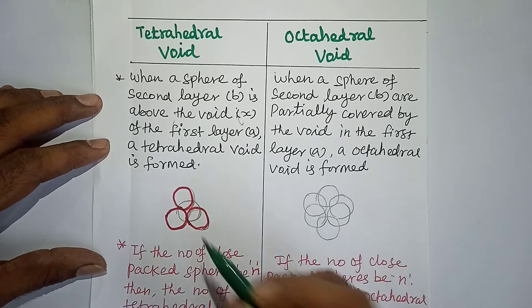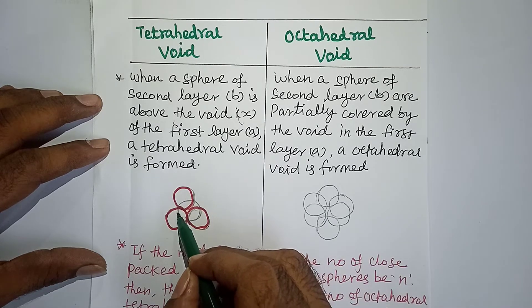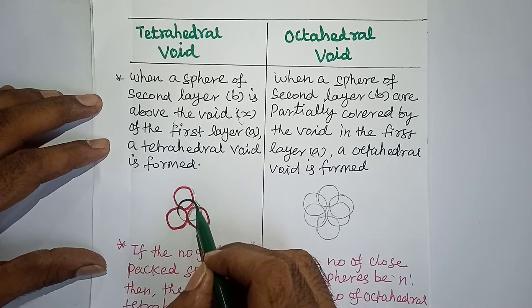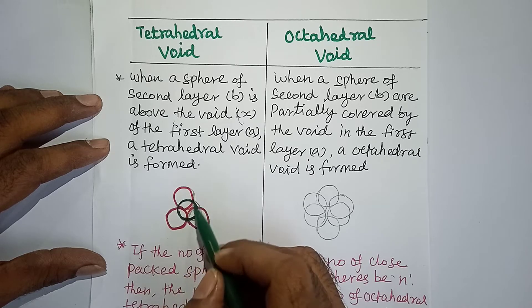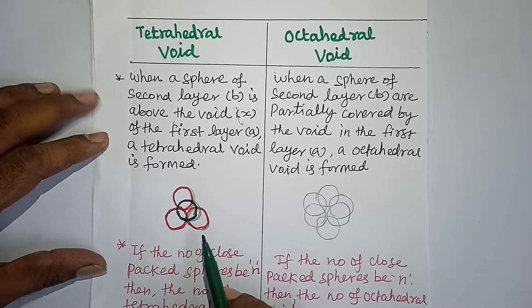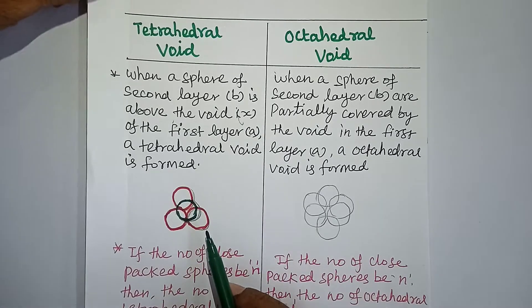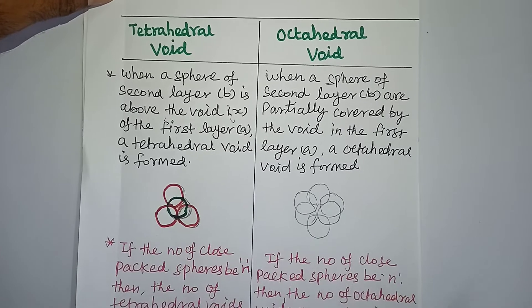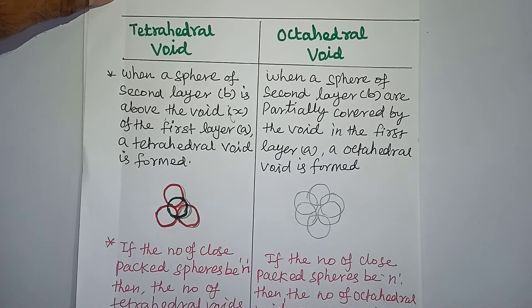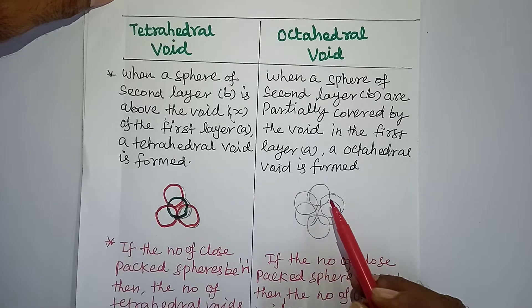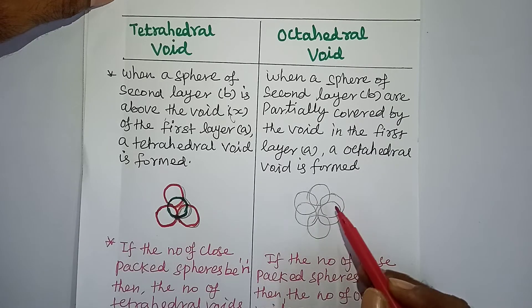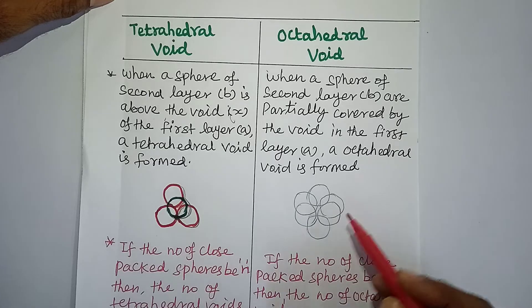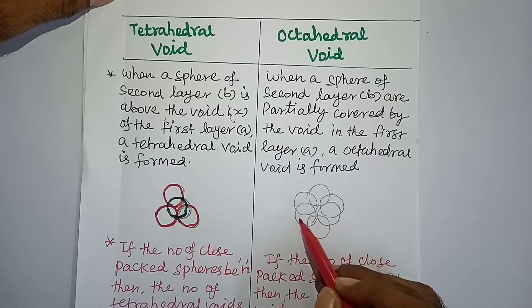We place a second layer on top of this layer, and we get tetrahedral voids. Tetrahedral voids are nothing but the free space which is present between four atoms. Octahedral voids means the free or vacant space between six atoms is called an octahedral void.